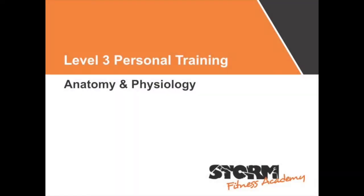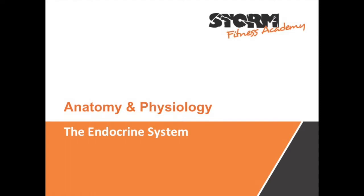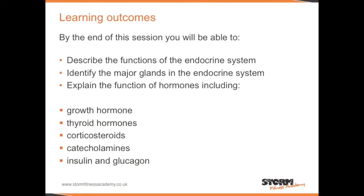Level 3 Personal Training Anatomy and Physiology: The Endocrine System. By the end of this session you will be able to describe the functions of the endocrine system, identify the major glands in the endocrine system, and explain the function of hormones including growth hormone, thyroid hormones, corticosteroids, catecholamines, insulin and glucagon.